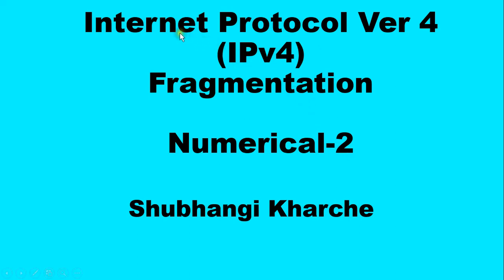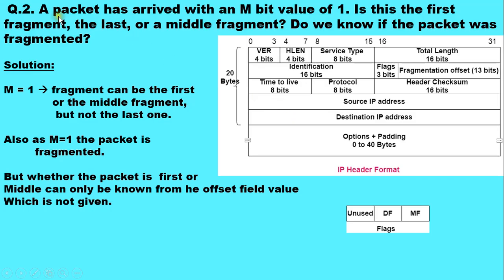Hello everyone, in this video I am going to explain an example on Internet Protocol version 4 fragmentation. The example is: a packet has arrived with an M bit value of 1. Is this the first fragment, the last, or a middle fragment? Do you know if the packet was fragmented?